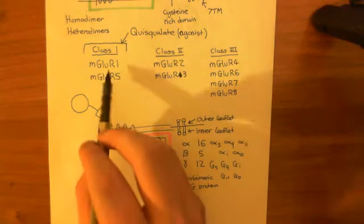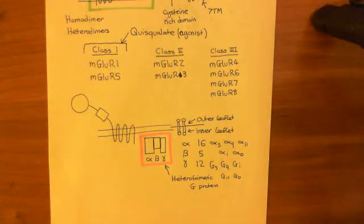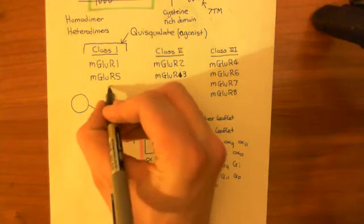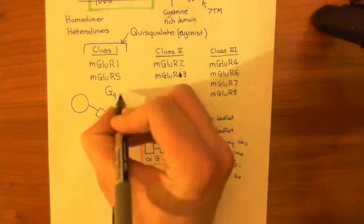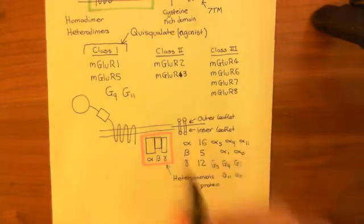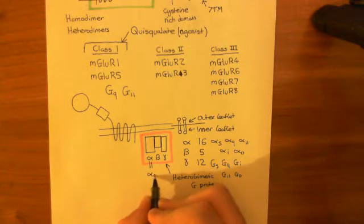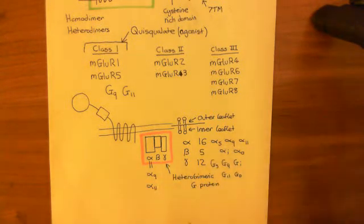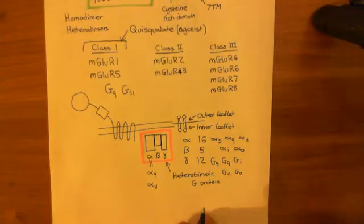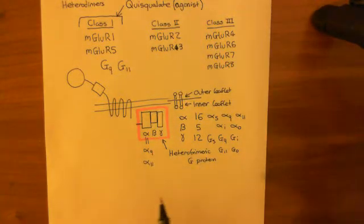Let's discuss mGluR1 and mGluR5, these class 1 metabotropic glutamate receptors. Class 1 metabotropic glutamate receptors are coupled to either GQ G proteins or G11 G proteins, which means that the alpha subunit is either alpha Q or alpha 11. Alpha Q and alpha 11 actually do pretty much the exact same thing; alpha Q is more famous because it's probably more common in the body.